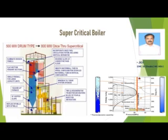My topic is supercritical boiler. In the 13th plan, the government has decided to shift all subcritical boilers to supercritical boilers with high megawatt capacity like 600, 700, 800 megawatts. The reason behind it is better emission control, pollution control, better efficiency with less consumption of fuel as well as water, and less investment cost per megawatt.